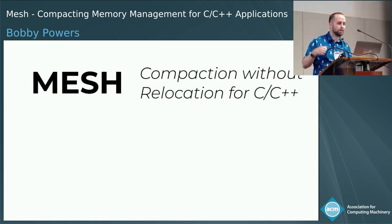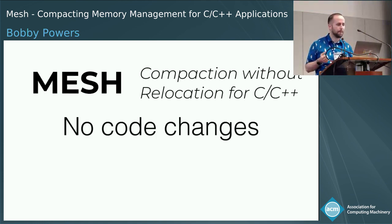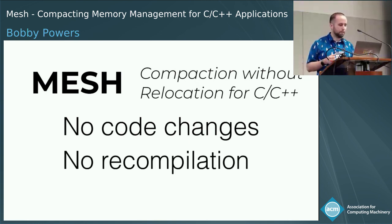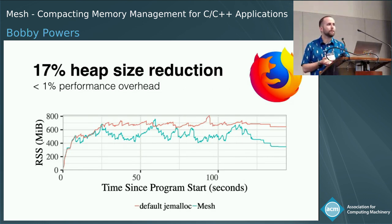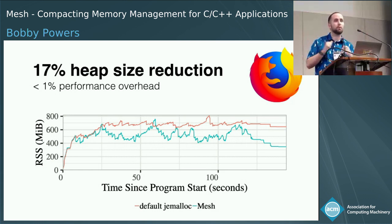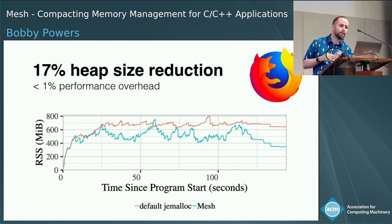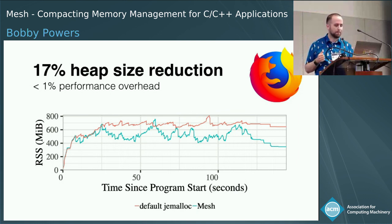Mesh is able to provide compaction without relocation for C and C++ applications for the first time, without requiring applications to have code changes or even recompilation. Applications can just LD_PRELOAD libmesh or link against the library and run. For an application like Firefox, running it under libmesh with the Speedometer benchmark, we see a 17% reduction in average heap size with under 1% impact on performance.